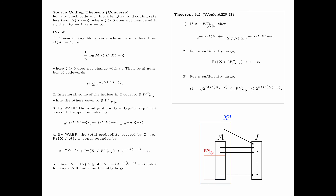Then the probability of error — the probability that x is not in A — is greater than 1 minus 2^(-n(zeta - epsilon)) + epsilon, where this lower bound on p_e holds for any epsilon greater than 0 and n sufficiently large. By taking epsilon less than zeta, we have zeta minus epsilon positive, so that when n is sufficiently large, 2^(-n(zeta - epsilon)) is less than epsilon. Note that this choice of n depends on the value of epsilon. Therefore, for n sufficiently large, the probability of error is greater than 1 minus 2*epsilon. Finally, we let epsilon tend to 0 to finish the proof.